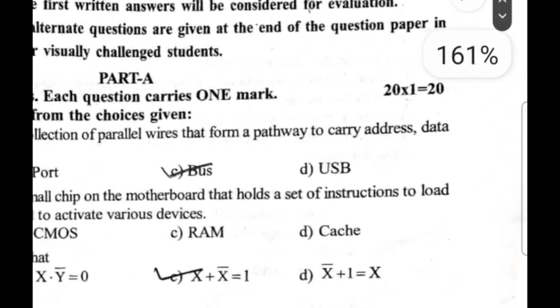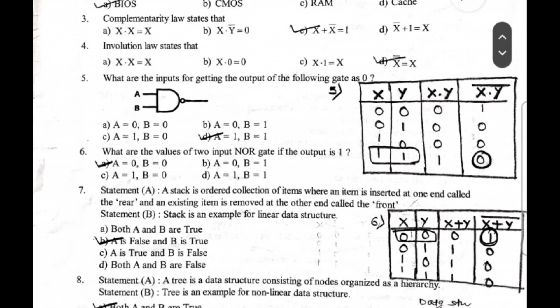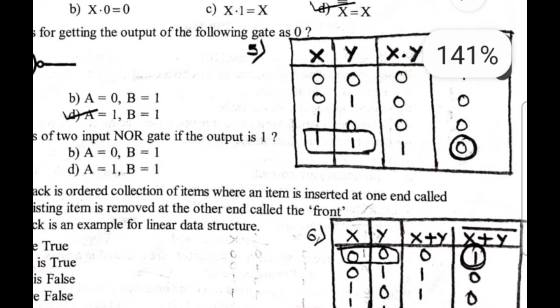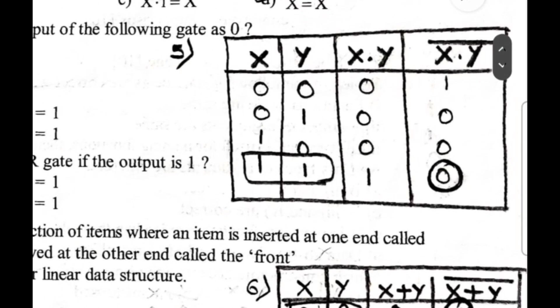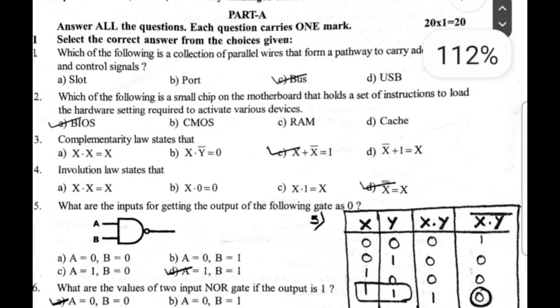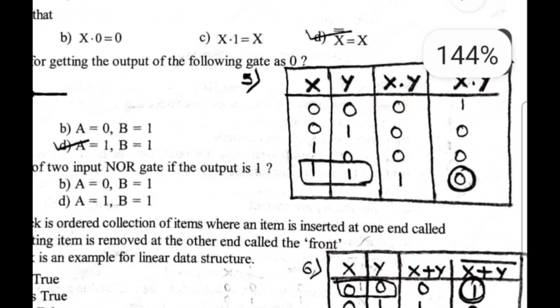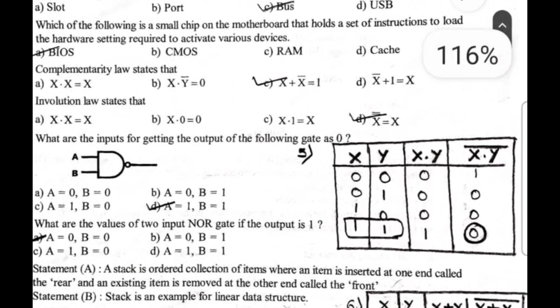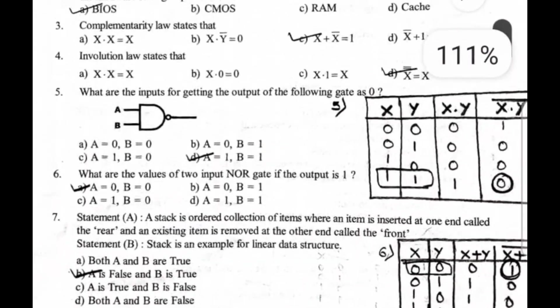Next question: what are the values of two input NOR gate if the output is one? Again I suggest please draw the truth table. First draw the column of X, draw the column of Y, then draw the OR gate, because NOR is the complement of OR gate. So here X plus Y, X plus Y bar. They are saying that if the output is one, what are the inputs? The inputs are zero and zero.